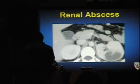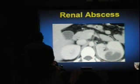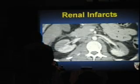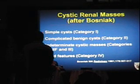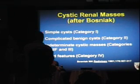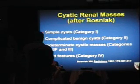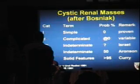This renal abscess was drained percutaneously. Sometimes you don't have much perinephric fat to judge; here you have to go by the relatively evenly thickened walls, which is unusual for renal cell. These are bilateral infarcts. There are four basic categories of cystic masses: simple cysts, complicated benign cysts, indeterminate cysts, and those with solid features.